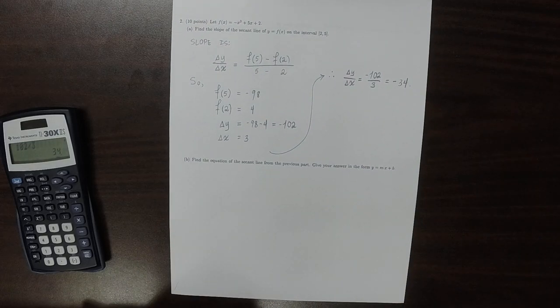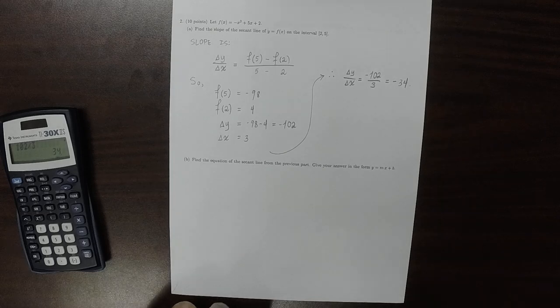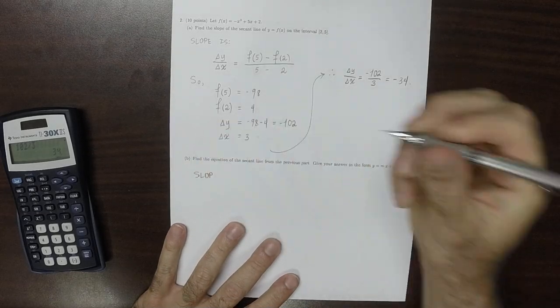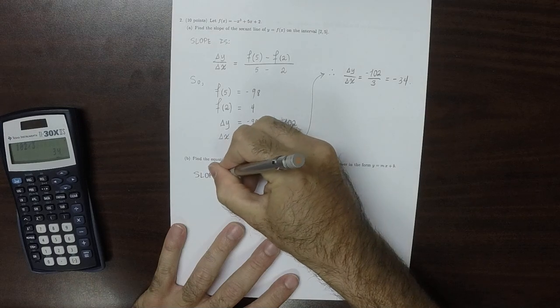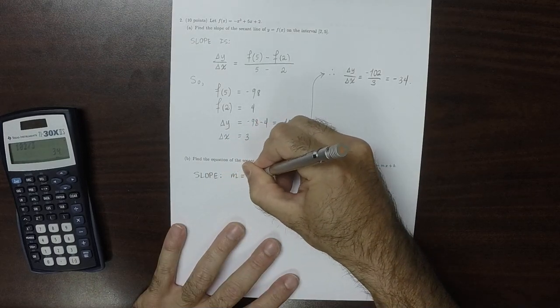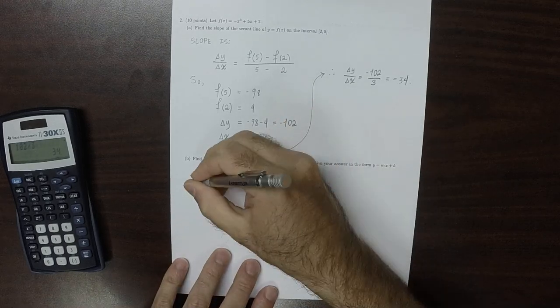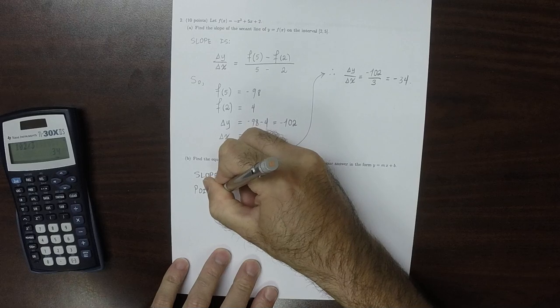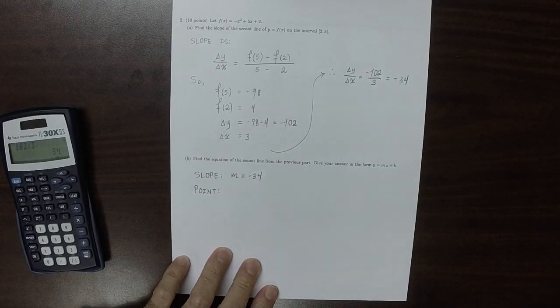Find the equation of the secant line. So we already know the slope of the line that we want. The slope is m equal to negative 34. The point, well, we actually already know two points on the line.